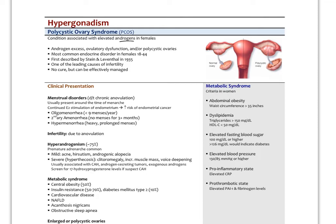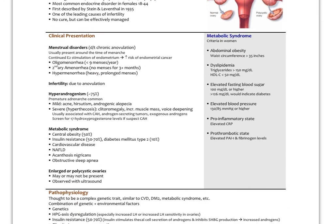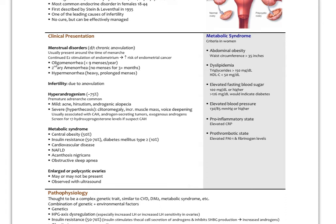PCOS is the most common endocrine disorder in females aged 18 to 44, first described by Stein and Leventhal in 1935, and one of the leading causes of infertility. The classic clinical presentation is menstrual disorders due to chronic anovulation, usually presenting around menarche. With oligomenorrhea — fewer than nine menses per year — there's continued estrogen stimulation proliferating the endometrium, creating increased risk of endometrial cancer. Presentation includes secondary amenorrhea, oligomenorrhea, or when menses do occur, hypermenorrhea with very heavy and prolonged bleeding.